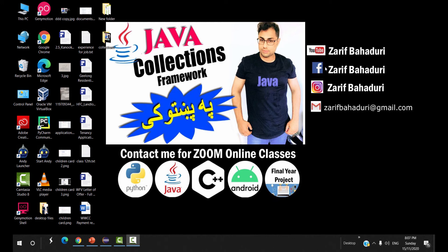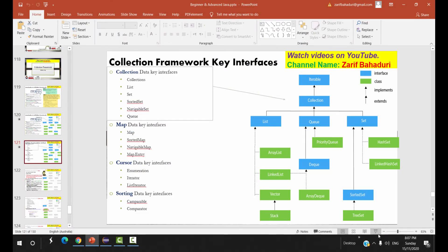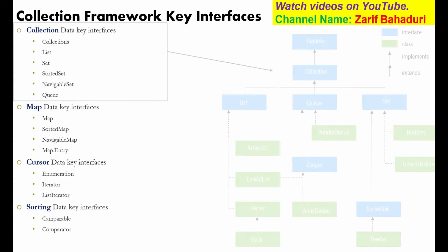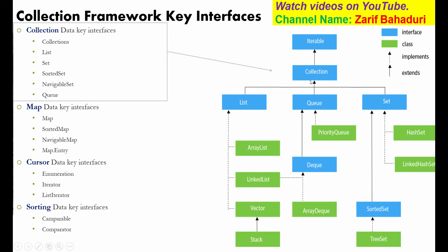Bismillahirrahmanirrahim. This is the Java Collection Framework video. The slides introduce the Java Collection Framework. The root interface is the parent interface, which is Iterable. The Collection interface extends into three sub-interfaces: List, Set, and the Collection itself. These are the main interfaces in the framework.